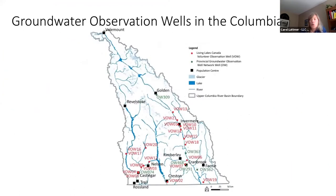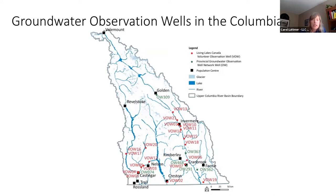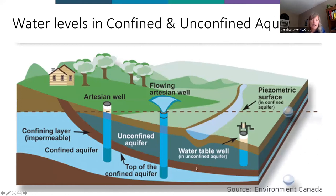We review, store, and analyze the data, then share it publicly on two platforms: the BC real-time water data tool and the Columbia Basin Water Hub. We have 22 wells across the Columbia Basin and are aiming to monitor across a range of elevations, climate conditions, hydrological and water use intensities, as well as different aquifer types. In an unconfined aquifer, the water in the well reflects the level of saturation in the soil — also known as a water table aquifer.